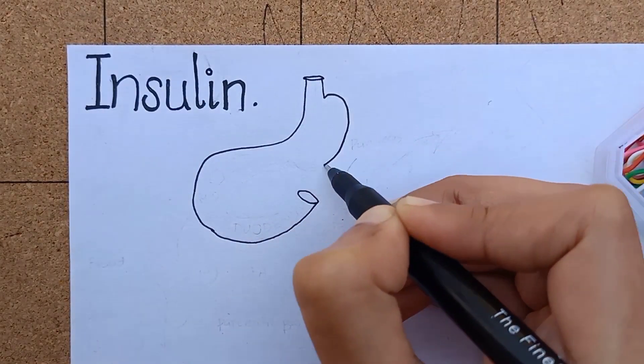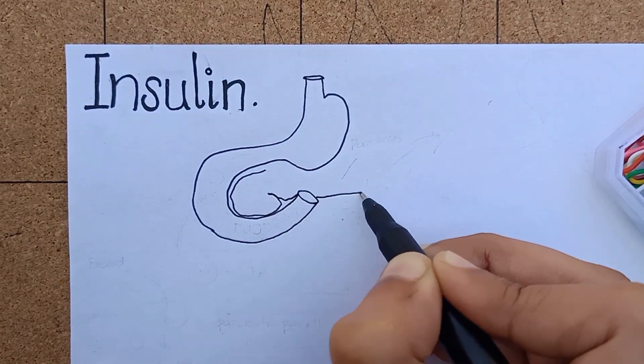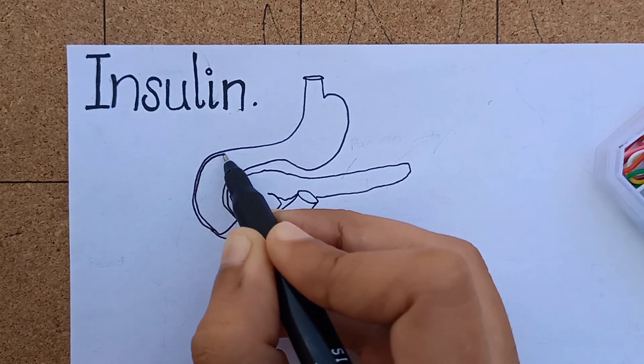We are going to learn about insulin. Insulin is a hormone associated with energy abundance.